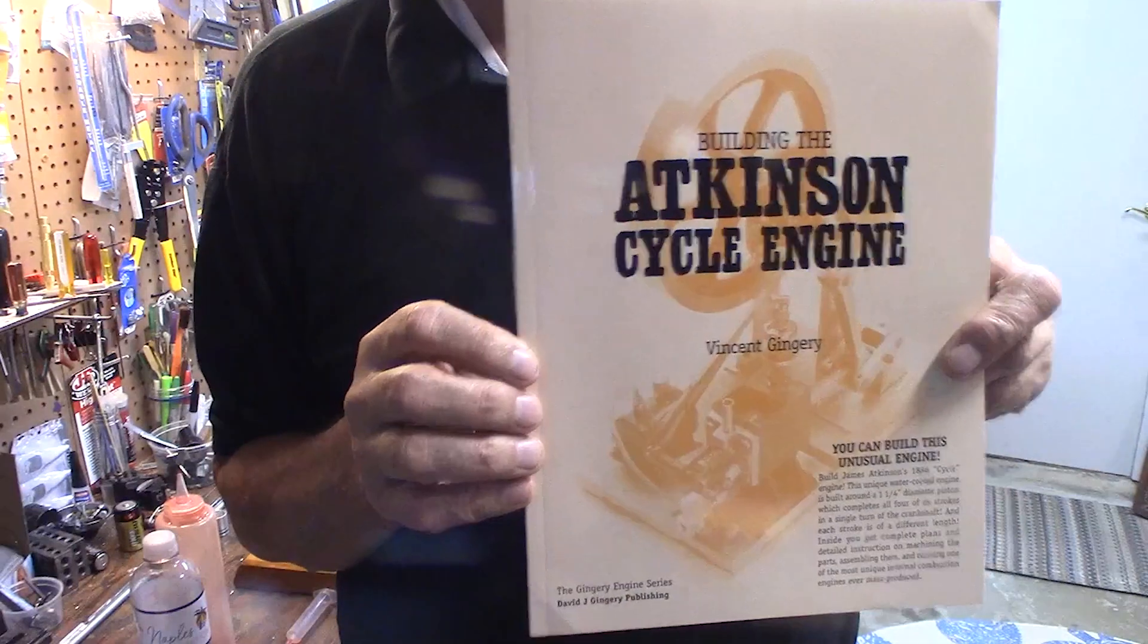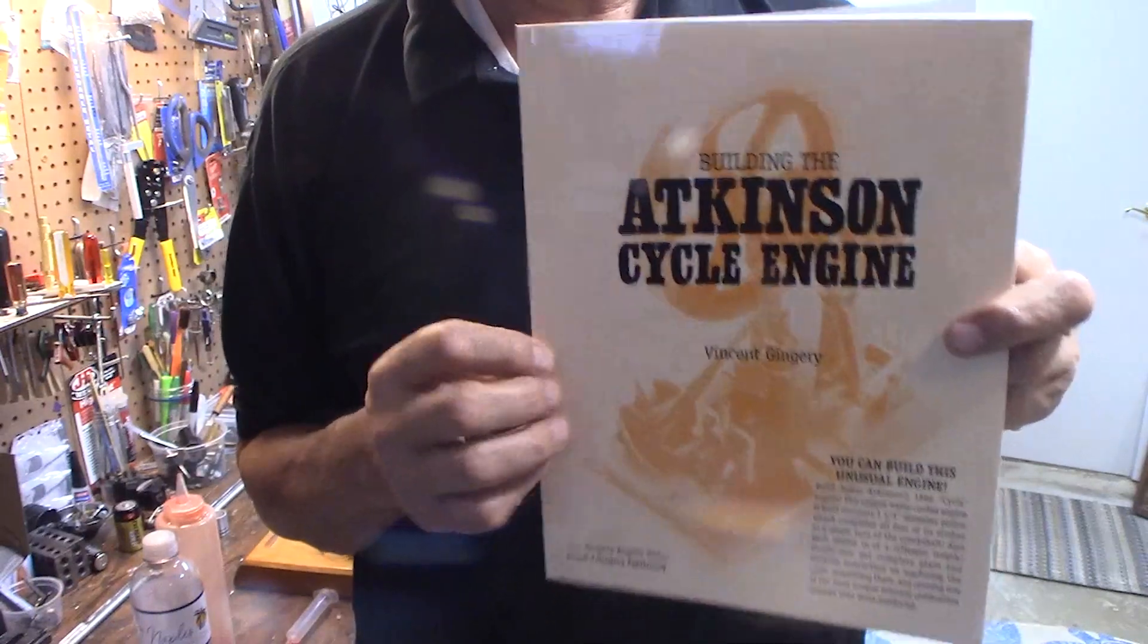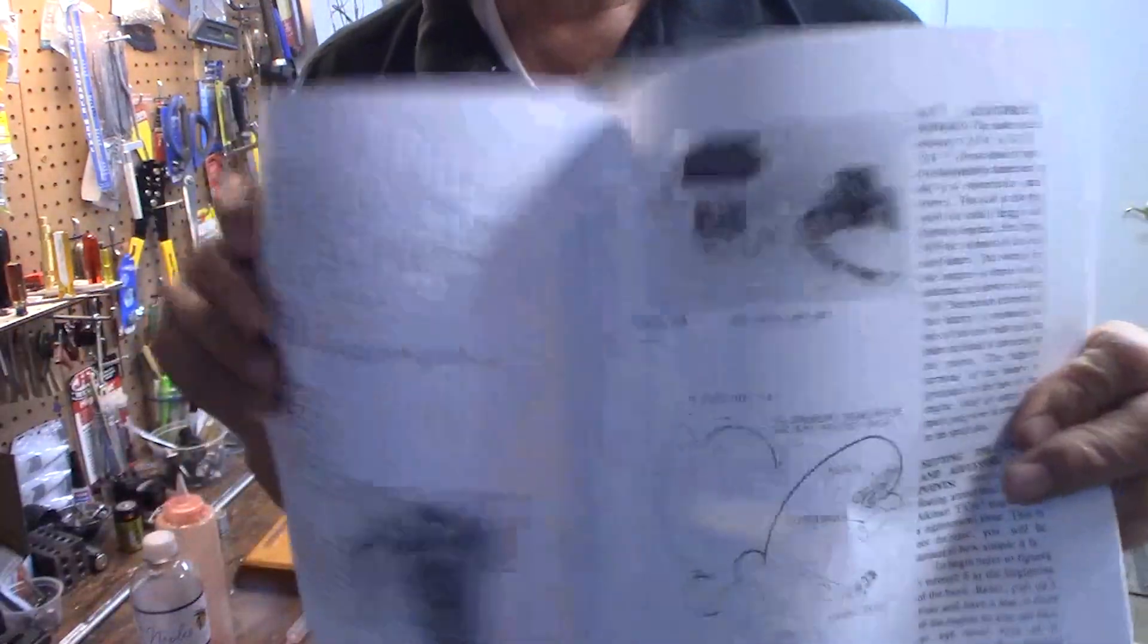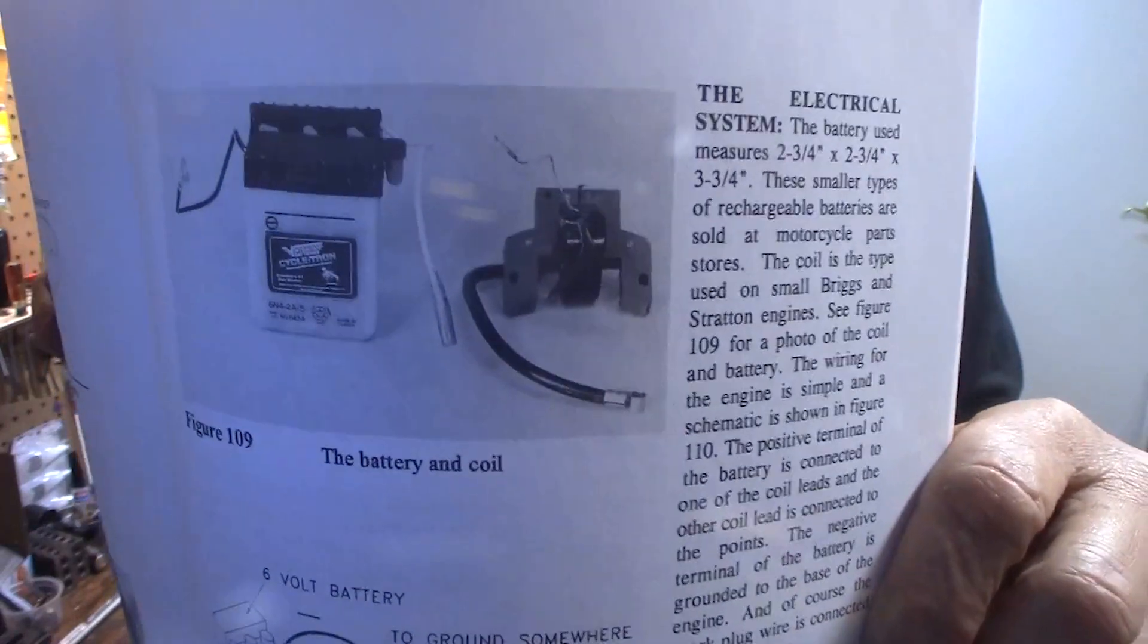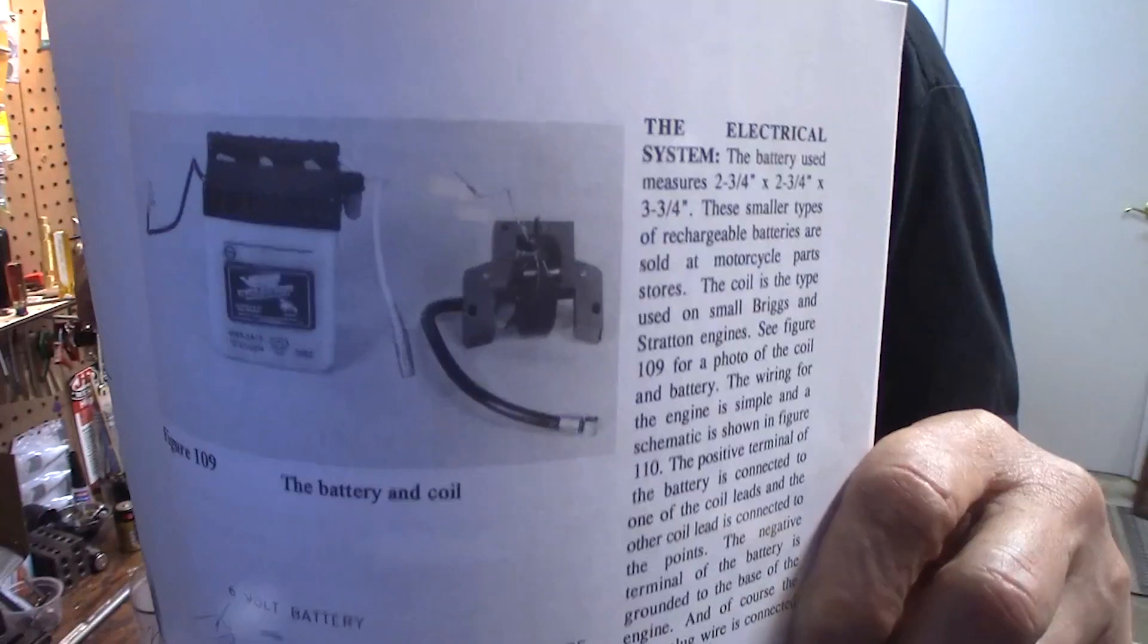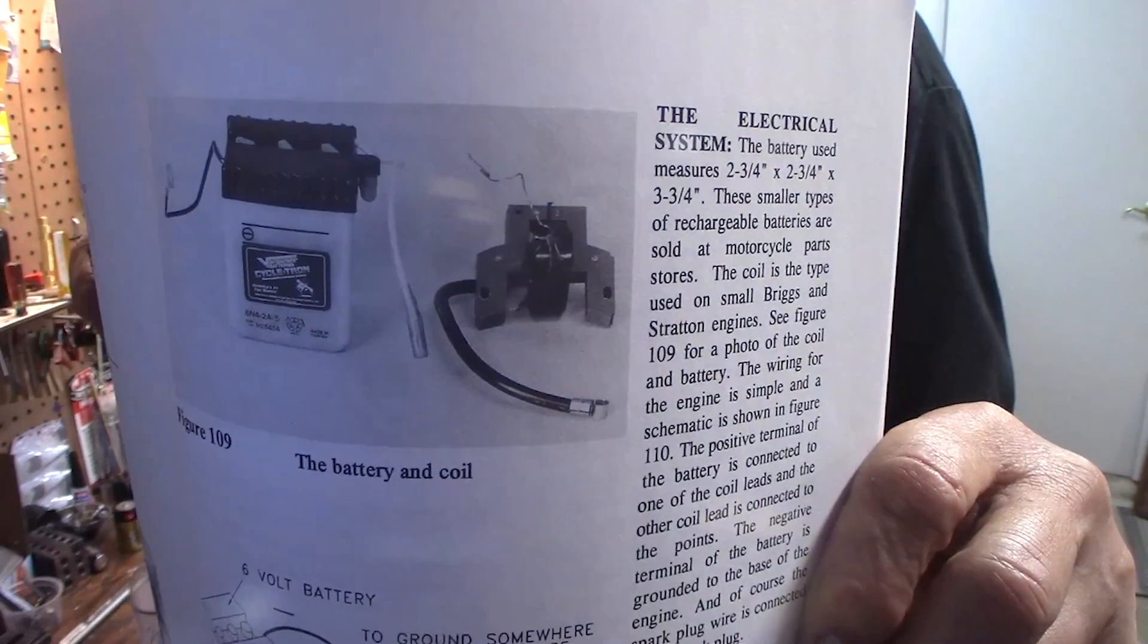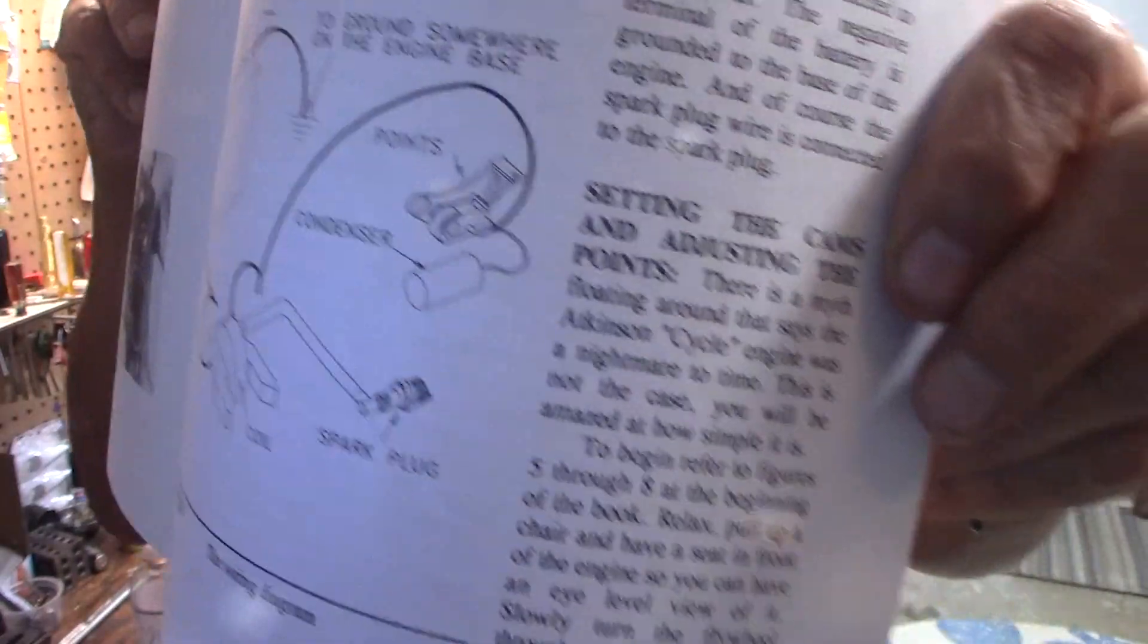This is the Atkinson cycle engine by Vincent Gingery and he gives complete drawings and instructions on how to cast parts, make patterns, cast parts and build this engine. Quite a few of these have been built, they do run. And inside here he gives the wiring diagram for an ignition using I believe a 6 volt motorcycle battery and coil.